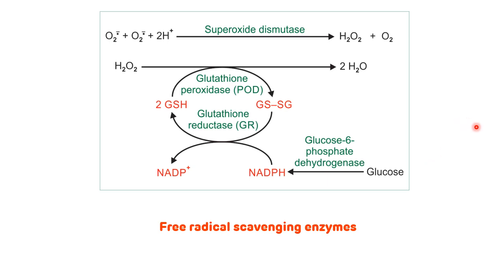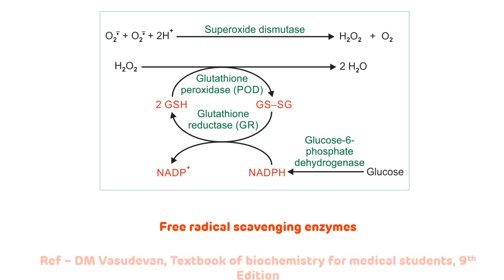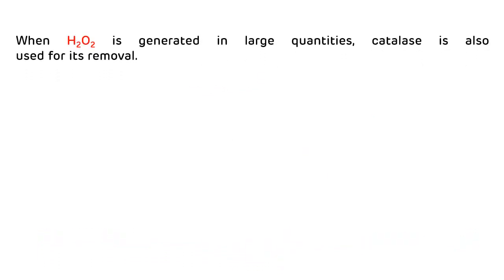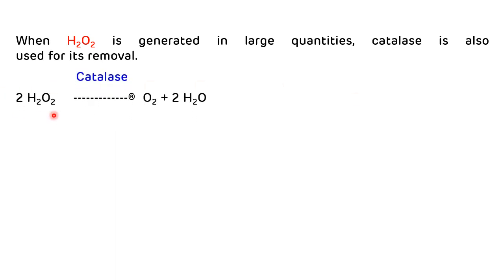So the free radical quenching enzymes are: superoxide dismutase, glutathione peroxidase, and glutathione reductase. When H2O2 is generated in large quantities, catalase is also used for its removal. Catalase converts H2O2 into oxygen and water, making it the fourth enzyme in the free radical quenching enzyme system.